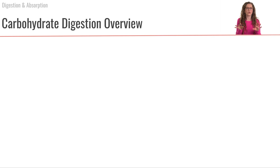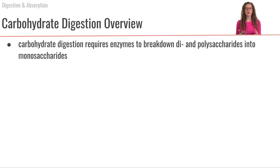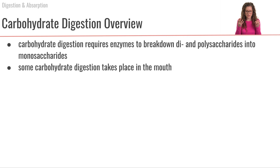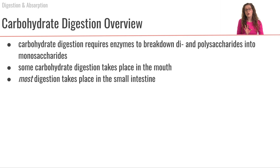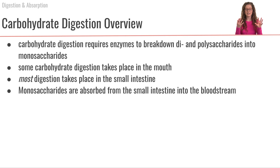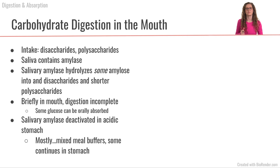First, let's talk through an overview about why we need carbohydrate digestion. We know that carbohydrates come in simple and complex forms. We require enzymes in order to break apart these disaccharides and polysaccharides into monosaccharides. Some of this carbohydrate digestion is going to take place in the mouth, but by far the most digestion is going to be taking place within the small intestine. Once we have these carbohydrates in their monosaccharide form, that is when we can absorb them from the small intestine into the bloodstream.